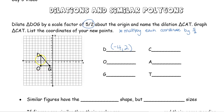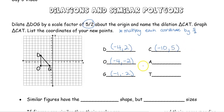We've got to start with our original coordinates: D is at (−4, 2), O is at (−4, −2), G is at (−1, −2). We're going to multiply by 5 halves, or 2.5. Make sure you have your calculator out. Negative 4 times 5 halves gives you −10; 2 times 5 halves gives you 5; −4 times 5 halves gives −10; −2 times 5 halves gives −5; and −1 times 5 halves gives −2.5; −2 times 2.5 gives −5.